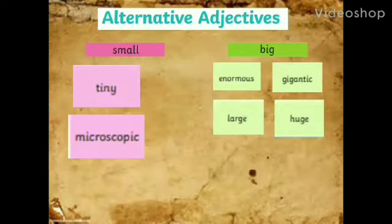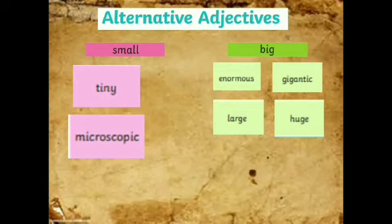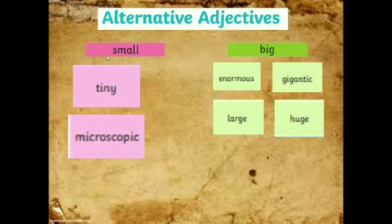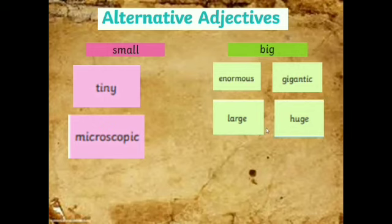Now let's talk about alternative adjectives to expand your vocabulary. Instead of always repeating the same adjective — small, small, small — like the car is small, the leaf is small, the house is small, you could use other adjectives that have the same meaning. Instead of repeating small, you could say tiny or microscopic. Instead of repeating big, you could say enormous, gigantic, large, or huge. They all have the same meaning.